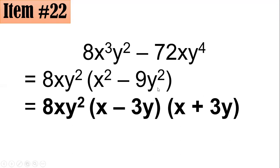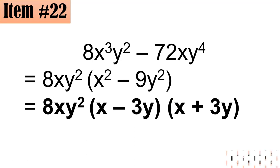Negative 72xy to the fourth divided by 8xy squared is negative 9y squared. So inside we have x squared minus 9y squared, which is a difference of two squares. The square root of x squared is x, and the square root of 9y squared is 3y, giving x minus 3y and x plus 3y. Hence the answer is 8xy squared times (x minus 3y) times (x plus 3y). Letter A.